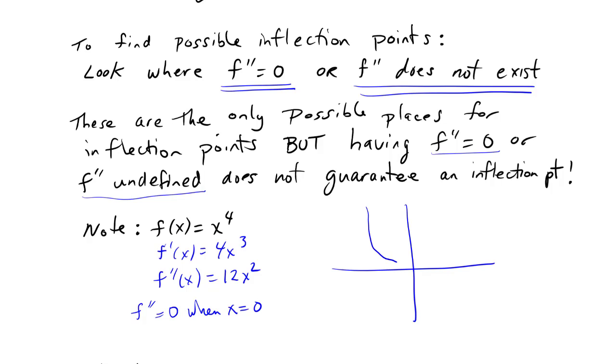x⁴ looks something like this. It's a little bit of a flatter version of x². So we see that (0,0) is not an inflection point.